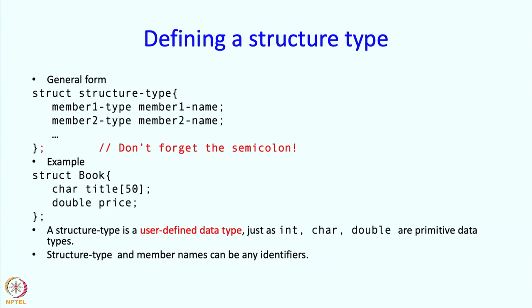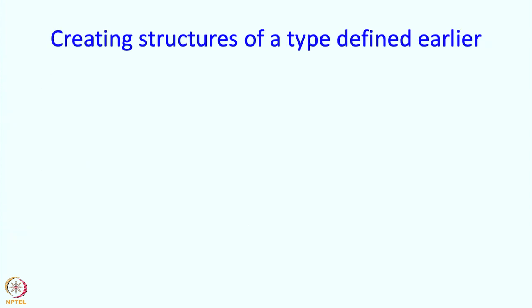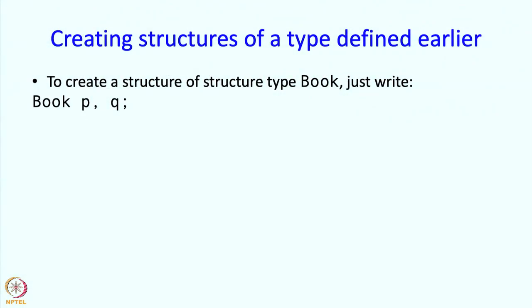And the structure type and member names can be any identifiers. So how do you create a structure of a type that you have defined earlier? So we just defined a structure type book. So if you want to create a structure of that type, we just simply write book PQ.